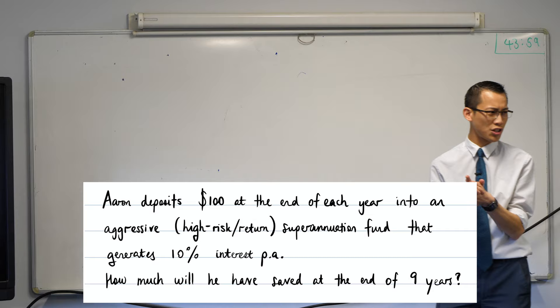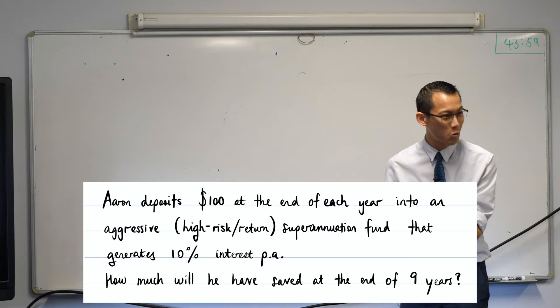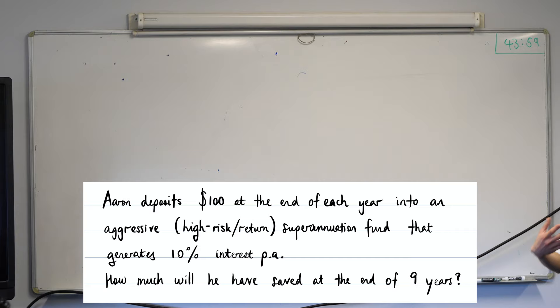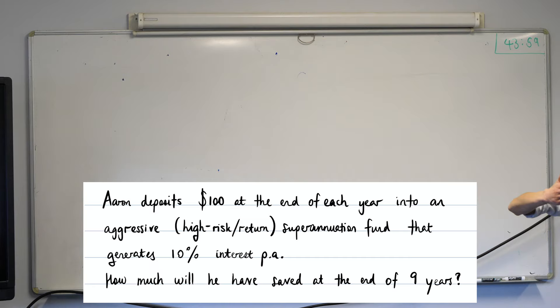He deposits that money into an aggressive superannuation fund. You're not used to seeing the word 'aggressive' come up in mathematics lessons — I'm putting it there on purpose. What does an aggressive fund mean? It's taking high risks — risks that mean when you invest that money, sometimes you're going to make a loss. If you research aggressive investment funds, they'll tell you upfront that within 10 years, you are likely to make losses three to four times at least. That's the nature of the risks being taken.